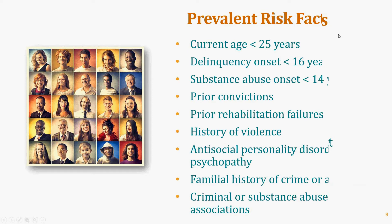Criminal or substance abuse associations — the adage that you are the company you keep is true. The more time you spend with people engaged in substance use or criminal activity, the greater the risk for treatment failure, probation failure, and failure in the criminal justice system. These are the primary examples of what most risk assessment tools are looking for in deciding whether someone has a high likelihood of failure, and therefore must be supervised more intensely with stringent consequences, rewards for doing well, and sanctions for doing poorly.